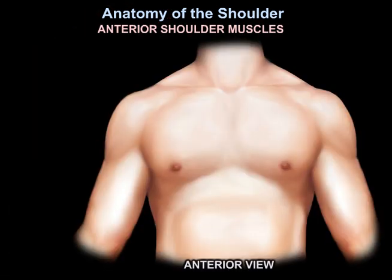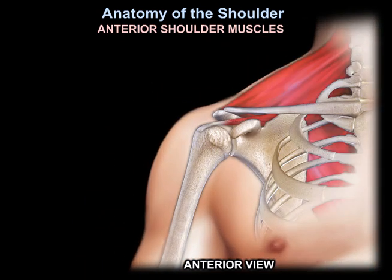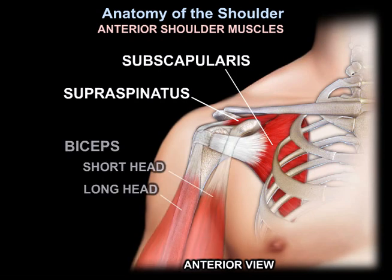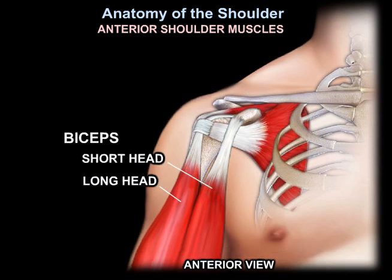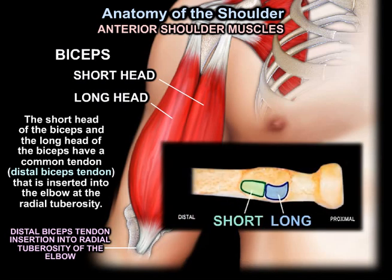How about the anterior shoulder muscles? You can see the supraspinatus, the subscapularis, the short head of the biceps and the long head of the biceps. This short head of the biceps has a common tendon, and this distal biceps tendon is inserted into the elbow at the radial tuberosity.